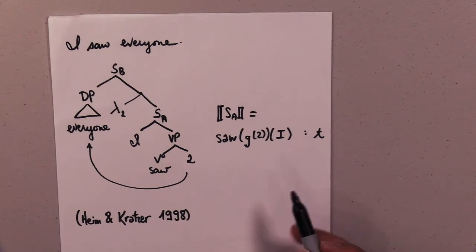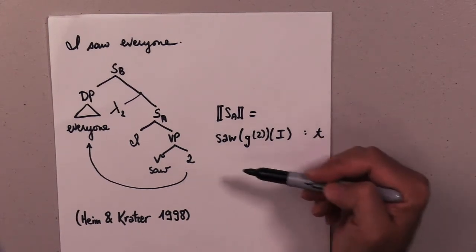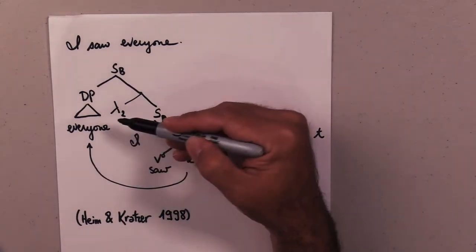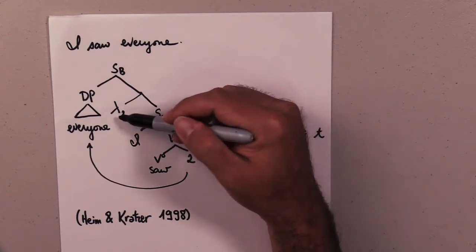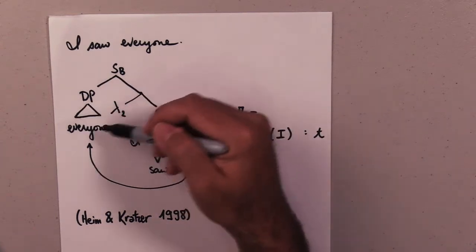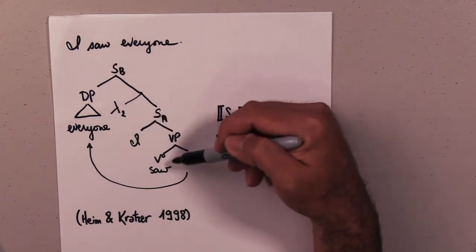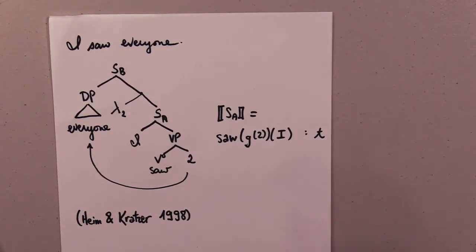In this case, you end up with both because quantifier raising requires them both. The abstraction will allow us to create properties and link expressions at one part of the structure to another part of the structure by manipulating the assignment function.